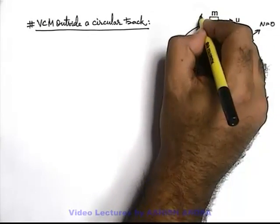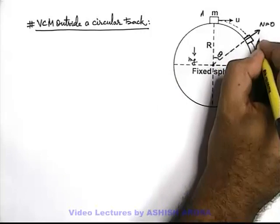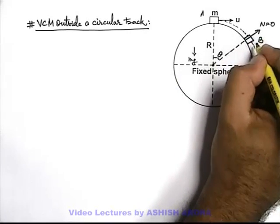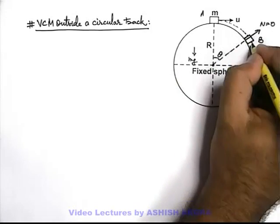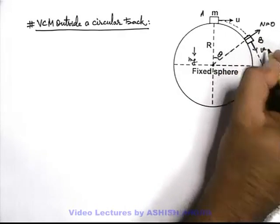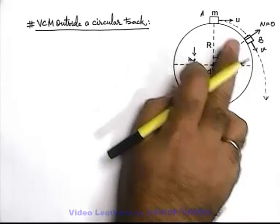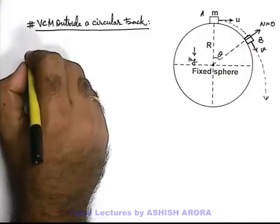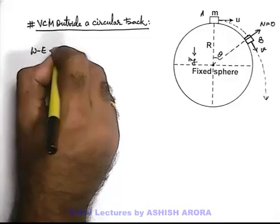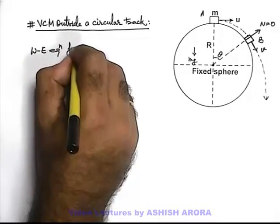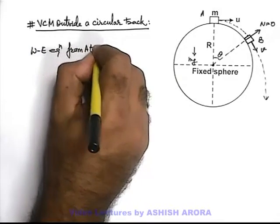So at any point, say if it starts from A and it is at an angle theta when we call its position is B, then the speed of this body at position B can be given by using work energy equation from position A to position B.